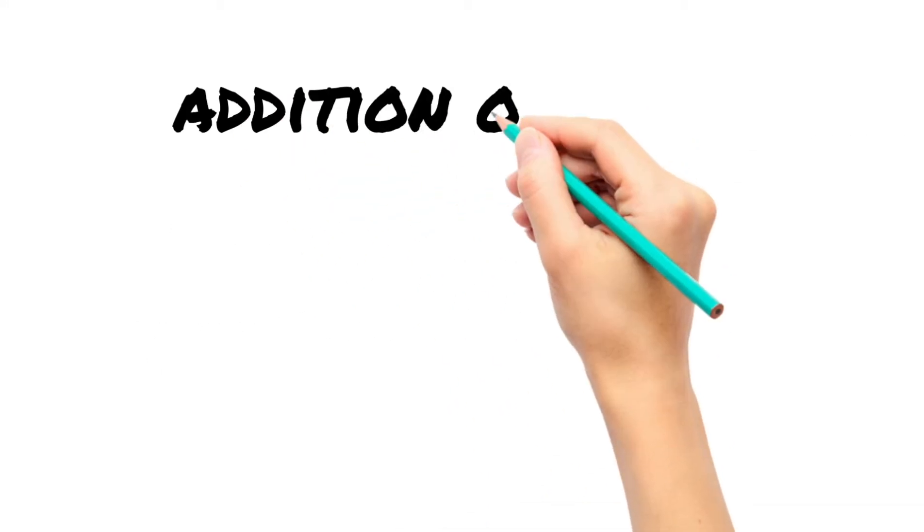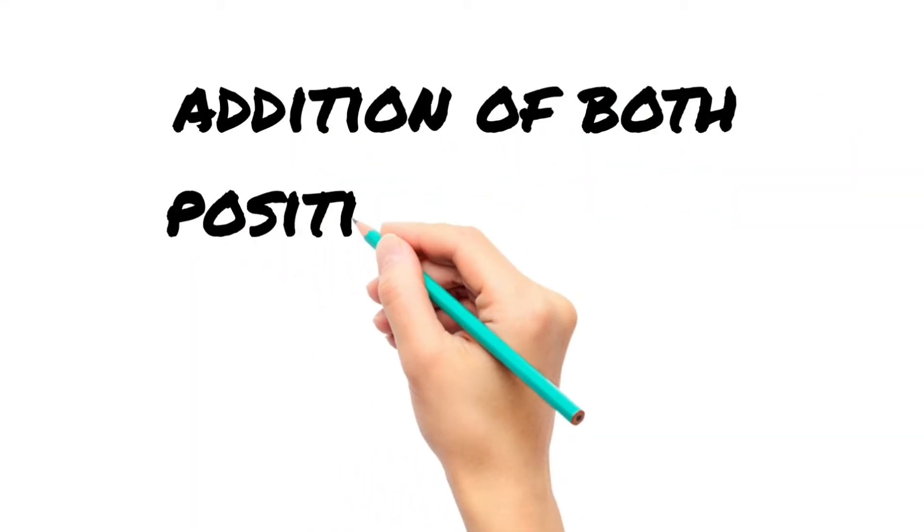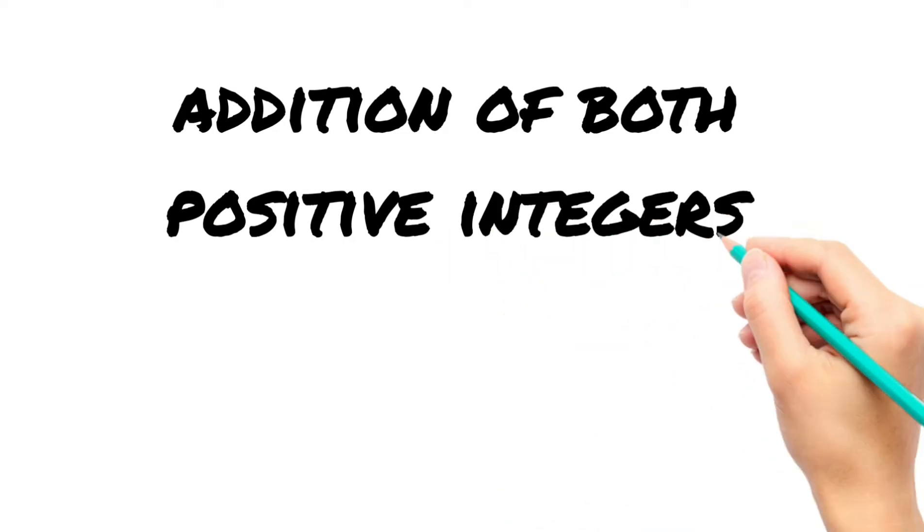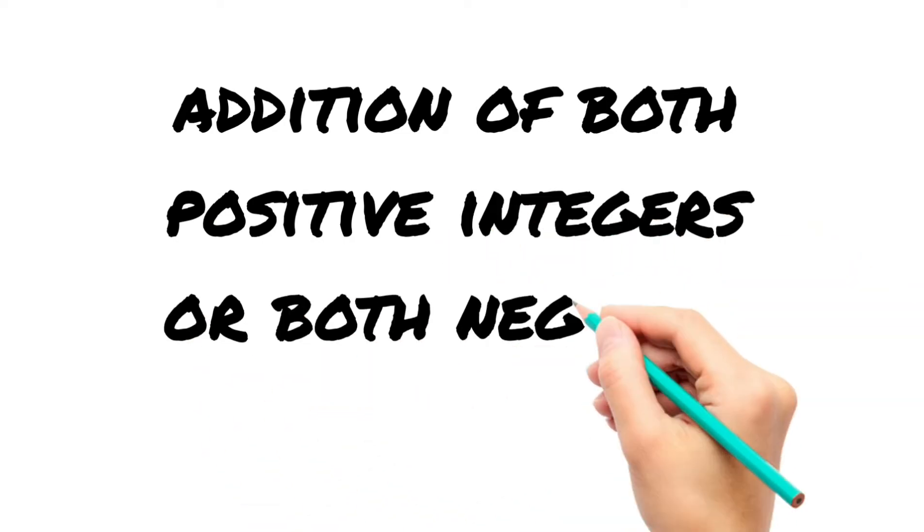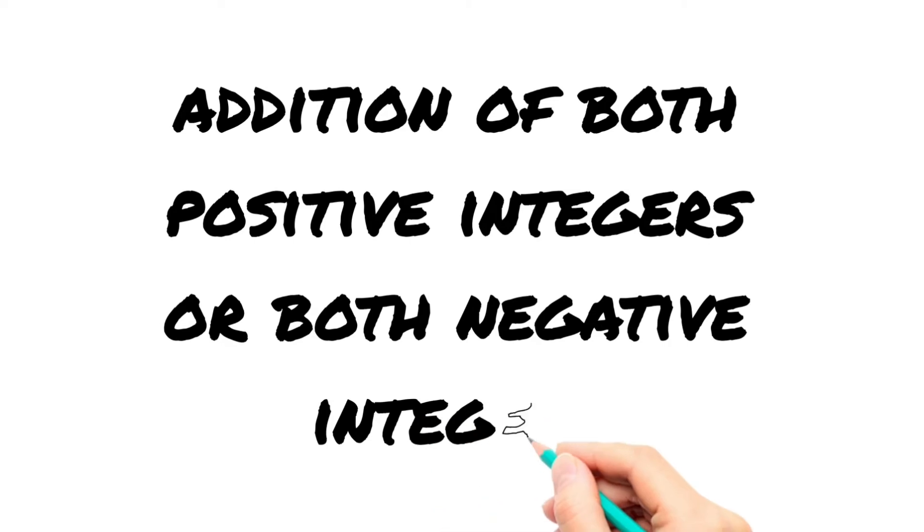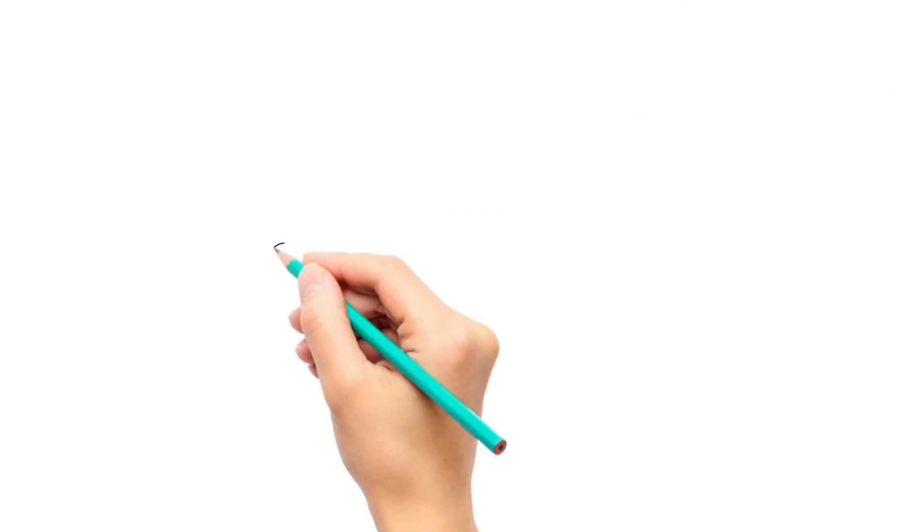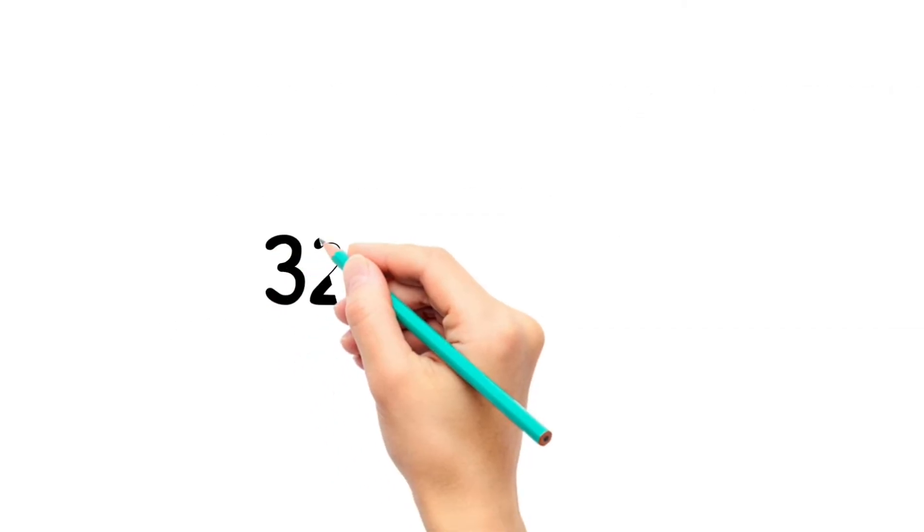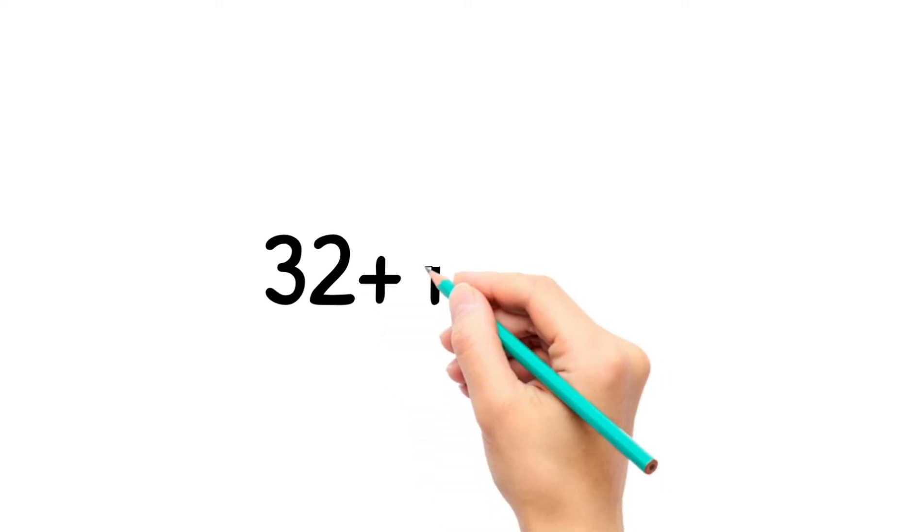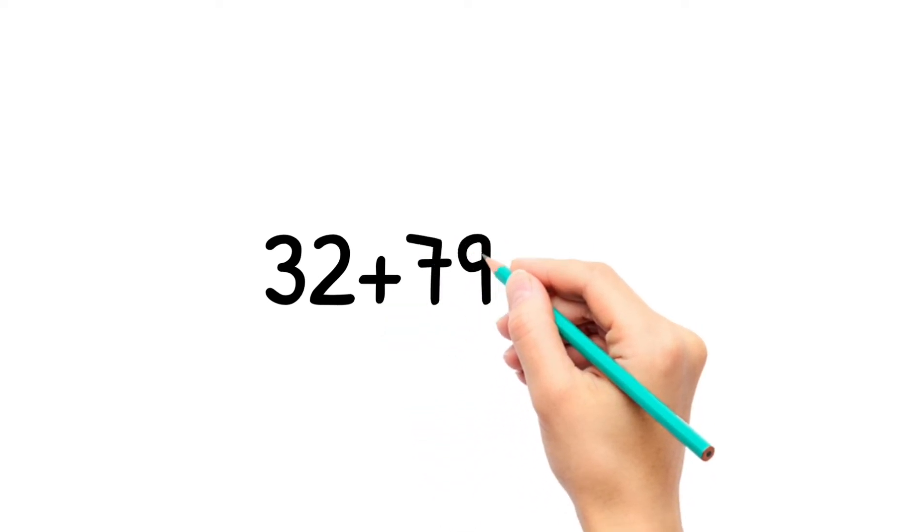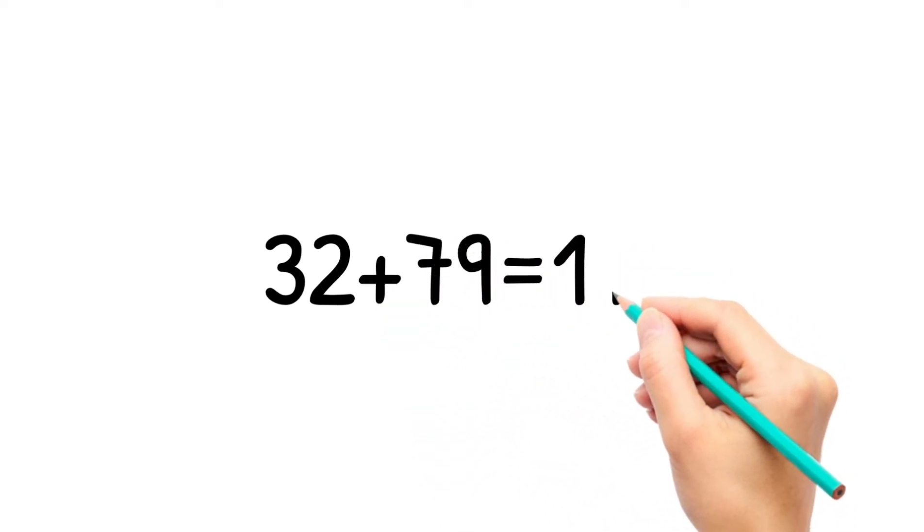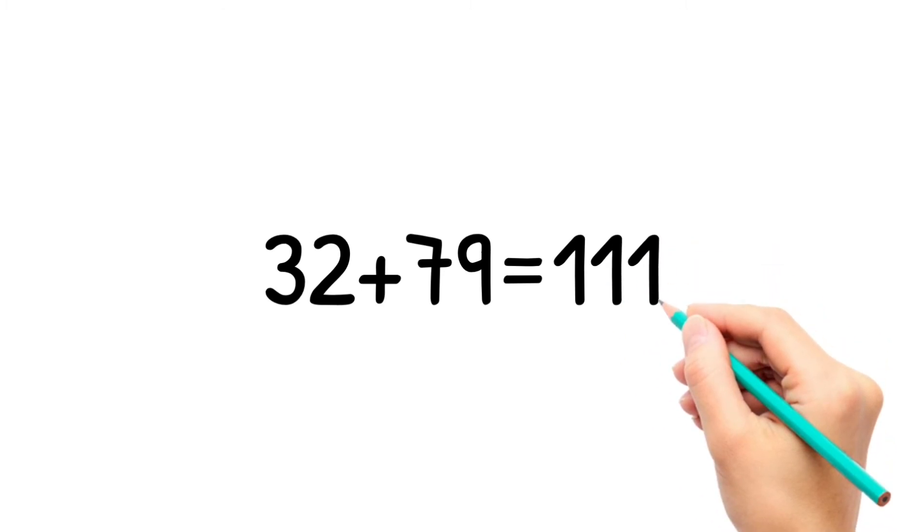Hello friends, in this video we'll learn addition of like integers. Like integers means either both are positive integers or both are negative integers. Let's begin. If I add both positive numbers, suppose I take 32 and 79, I'll do the normal addition. We'll add 32 and 79 to get the answer.